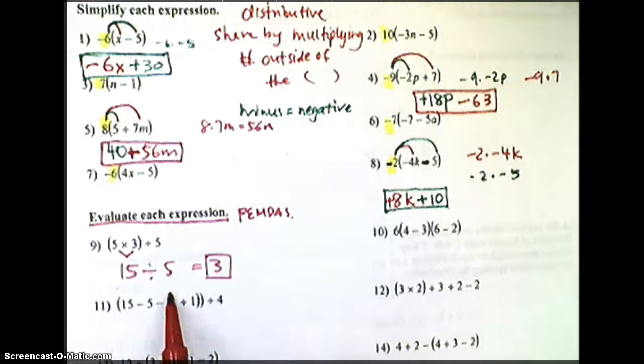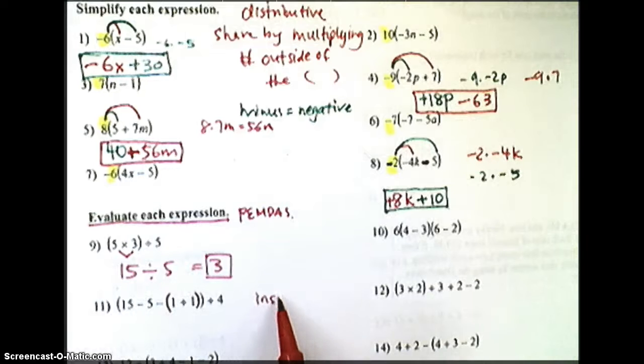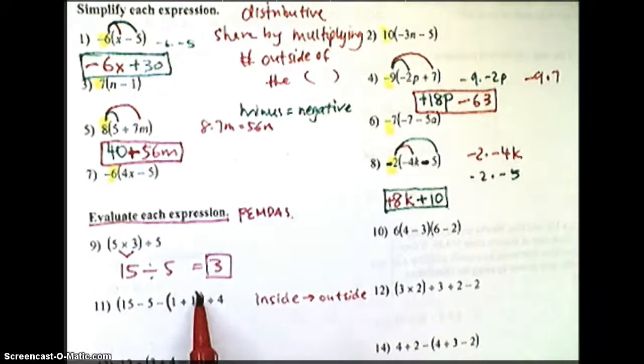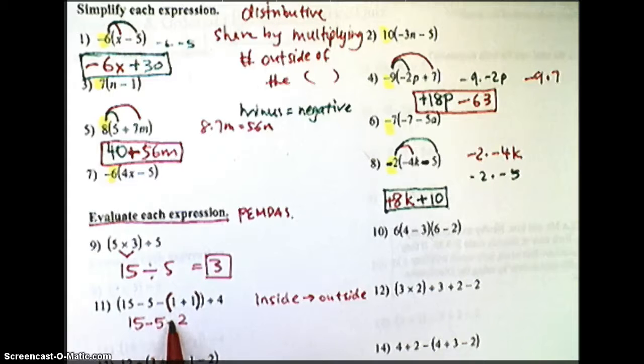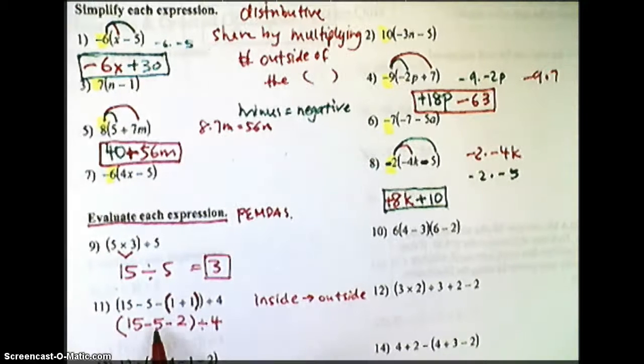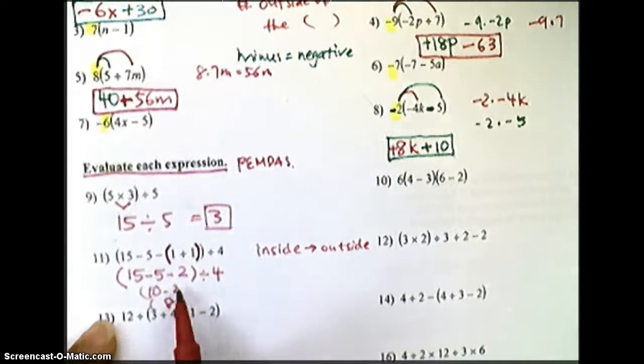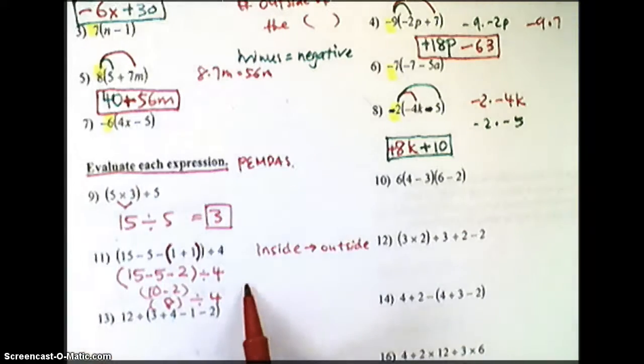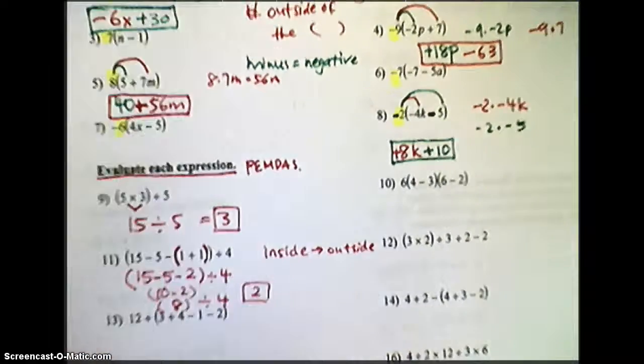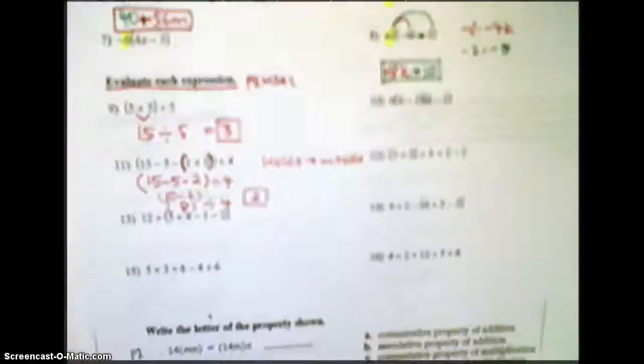Let's try number 11. We do see several parentheses here. Anytime you see more than one parentheses, you start from the inside, and then you work your way to the outside of the parentheses. So the most inside parentheses would be the 1 plus the 1. So we're going to do that first, which is 2. I have 15 minus 5 minus the 2, and that's in parentheses. And I'm going to later divide by 4. Then we're going to subtract. Always subtract from left to right. So I'm going to take 15 minus 5, which is 10. Then subtract that with 2, which is 8. Then I'm going to divide by 4. 8 divided by 4 will give me 2. I'm simply following PEMDAS.